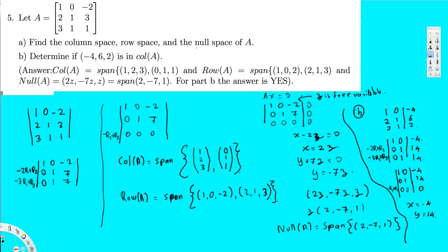Since we have a solution, it means that the vector (minus 4, 6, 2) is in the column space of A. Therefore, minus 4, 6, 2 is in the column space of A. This is the final answer for this question. I hope you guys liked this video — see you next time.